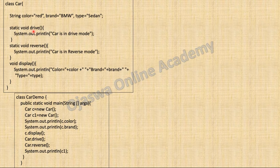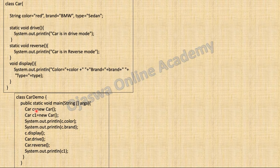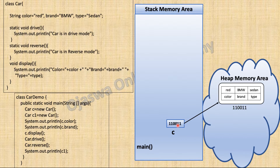In our previous programs we wrote the main method in the same class. Here I am writing a different class for the main method. I have defined one more class, car demo, with the main method inside it. When you run a Java application, you always run the class having the main method. Inside the main method, we have created an object of class car. When the interpreter reads car C equal to new car, it will allocate memory for object C inside the heap and the reference variable C will be created inside the stack. The address of the object will be stored inside reference variable C, and C will point towards the object residing on the heap.